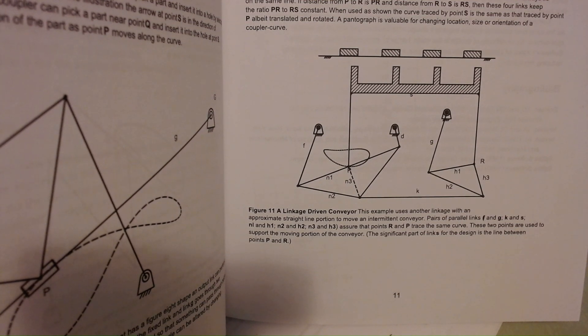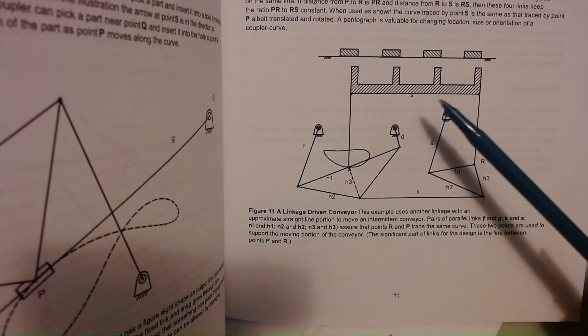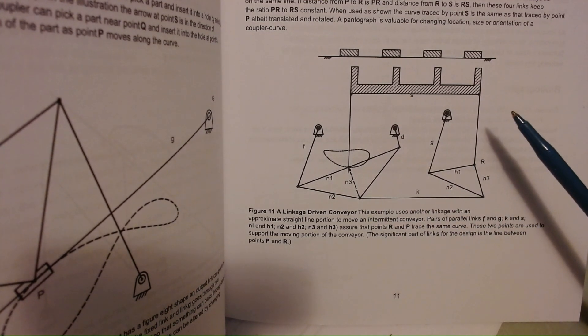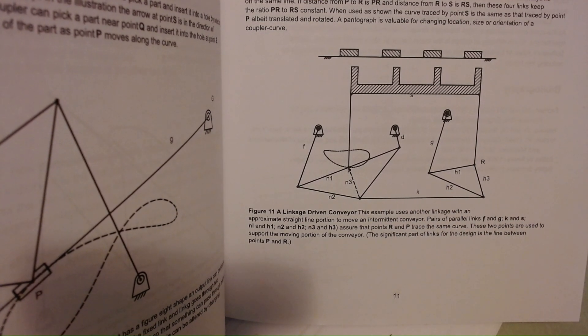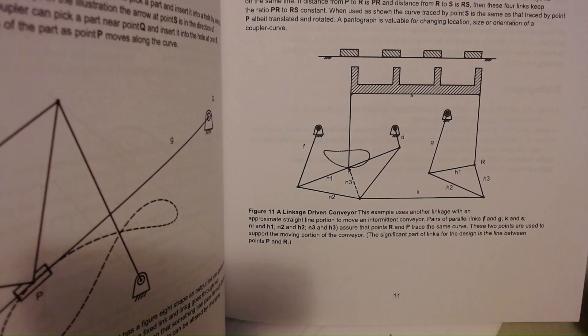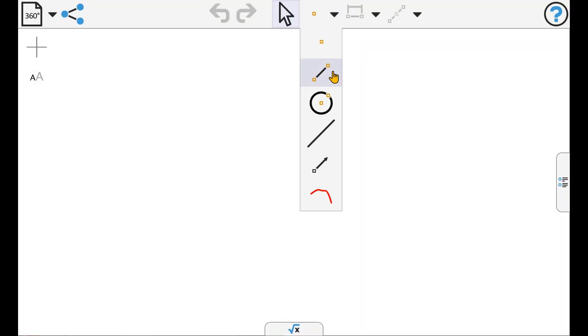I'm going to model this mechanism for moving a conveyor belt. The end effector here needs to engage vertically, move horizontally, and then disengage. It's driven by a four-bar linkage and we need a coupler curve which has a flat horizontal part.